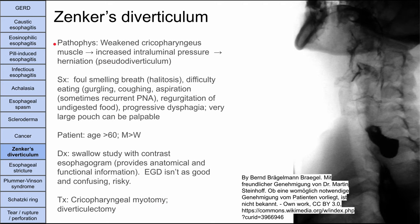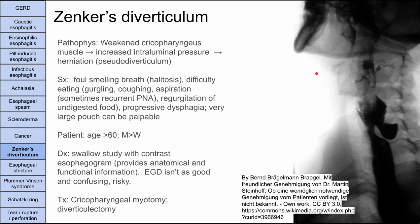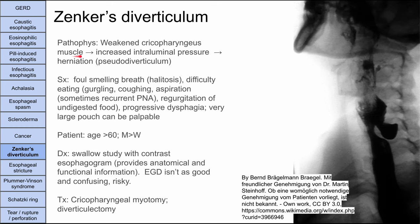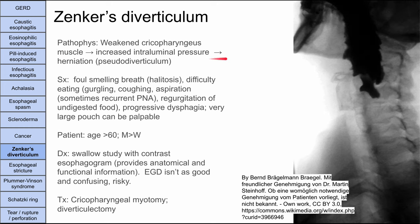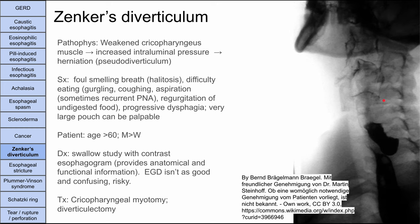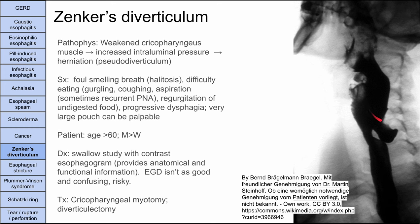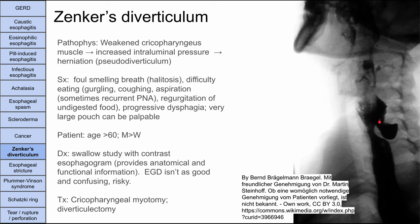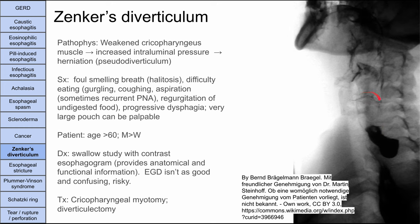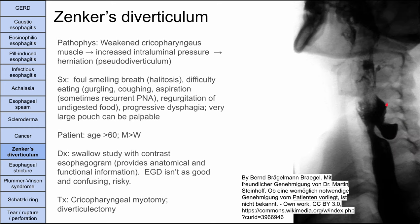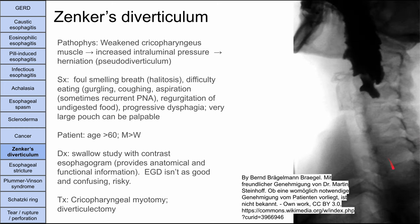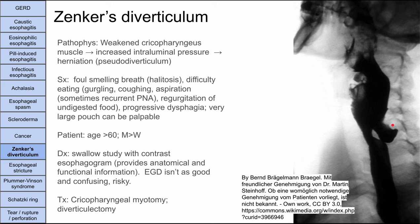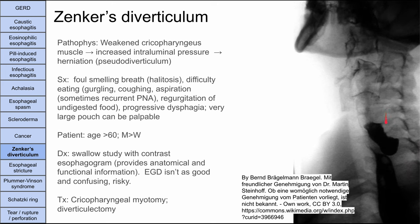Next is Zenker's diverticulum. This is a false diverticulum caused by a weakened cricopharyngeus muscle. The weakness leads to increased intraluminal pressure behind the muscle, which herniates through it and creates a pseudo-diverticulum — an outpouching where material can get stuck. Water and food can accumulate there, and trapped food will rot, with bacteria breaking it down. This results in foul-smelling breath (halitosis).